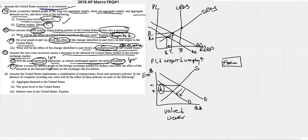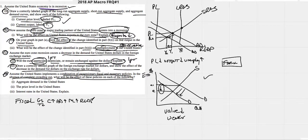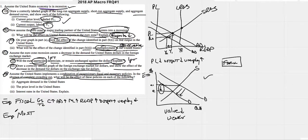Draw a correctly labeled graph of the foreign exchange market for dollars and show the effect of the decrease in demand. Part D: assume the US implements a combination of expansionary fiscal and monetary policy in the absence of complete crowding out. There's a causal chain here. Expansionary fiscal policy — government spending up or taxes down — causes consumption to go up, which makes aggregate demand go up, price level up, real GDP up, output up, and unemployment down.